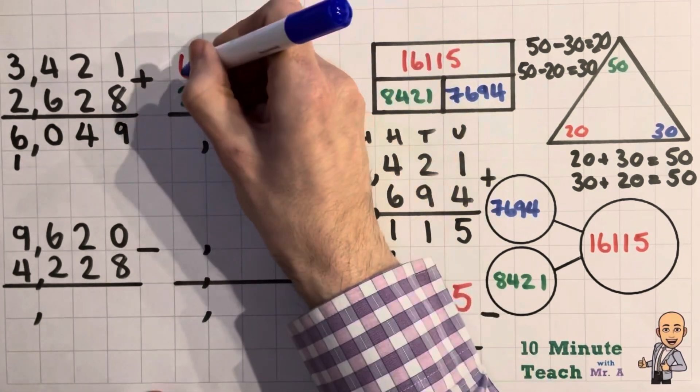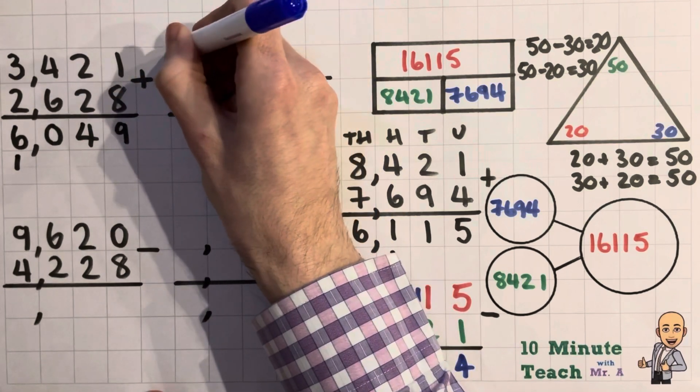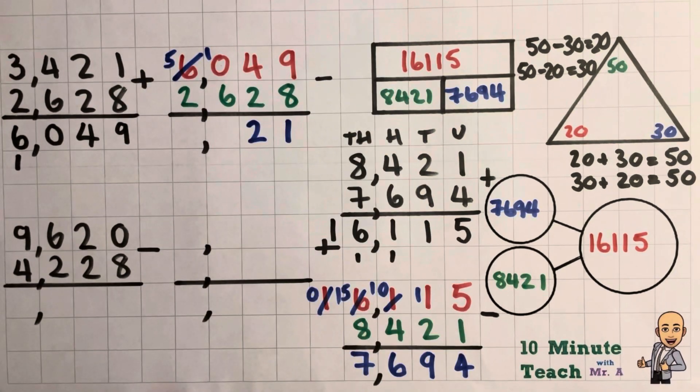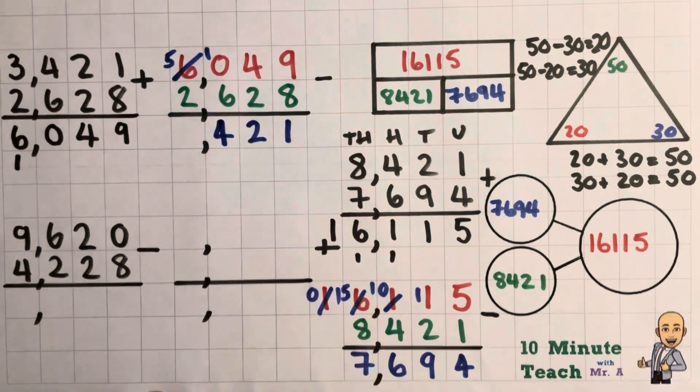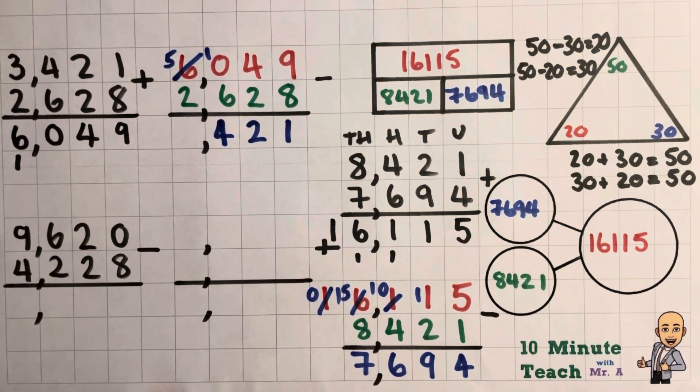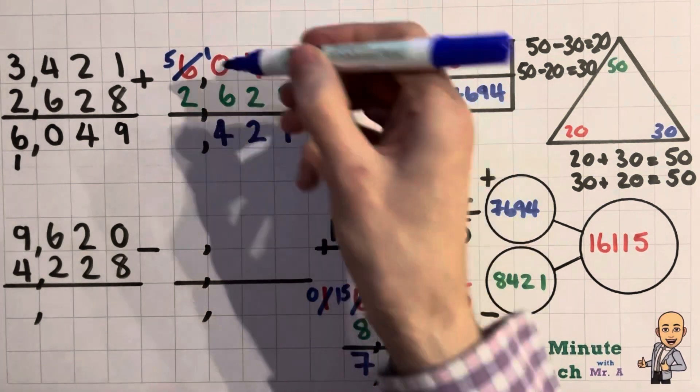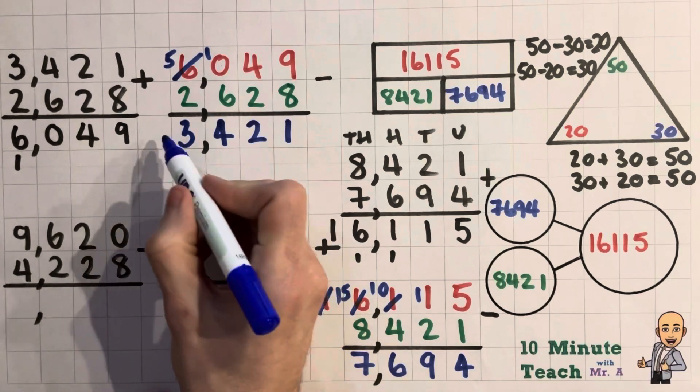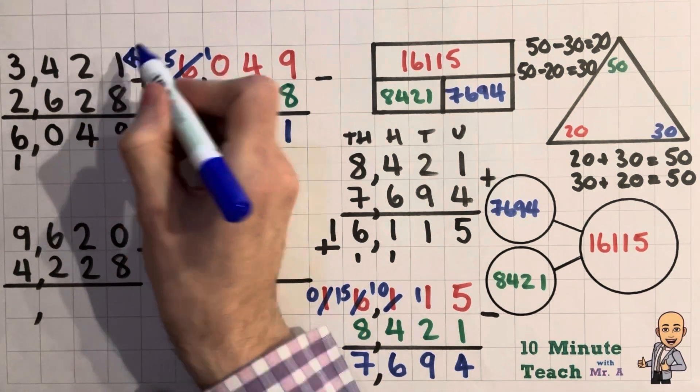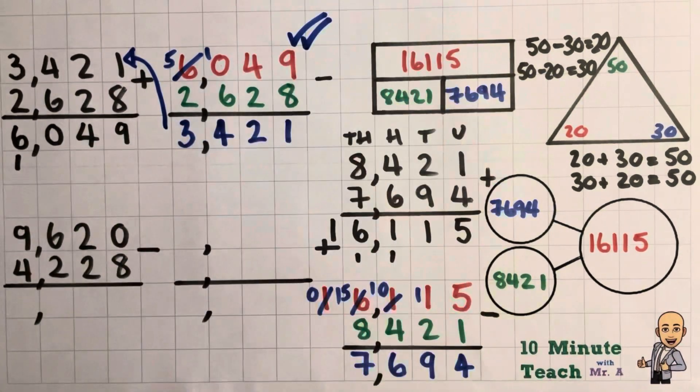So 9 subtract 8 leaves us with 1. 40 subtract 20 leaves us with 20. No hundreds take 600 I can't do, so let's borrow from there. 1,000 take 600 or 10 take 6 leaves us with 400. And our final one, it's looking good guys, 5 take the 2 leaves us with 3,000. So that actually matches that one. So my answer is absolutely correct on there. Fantastic.